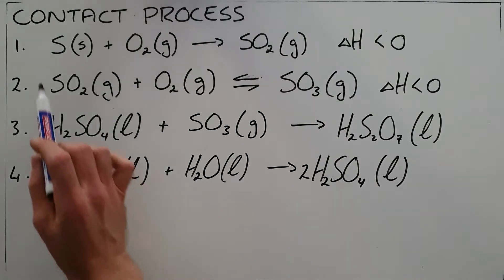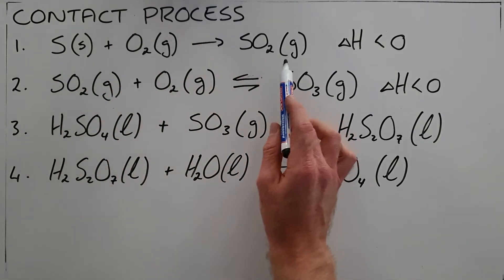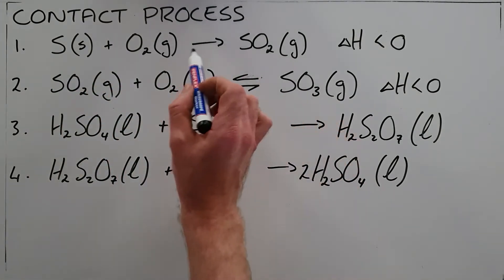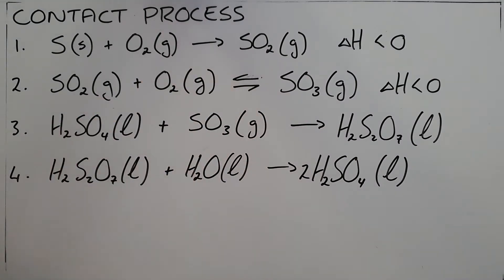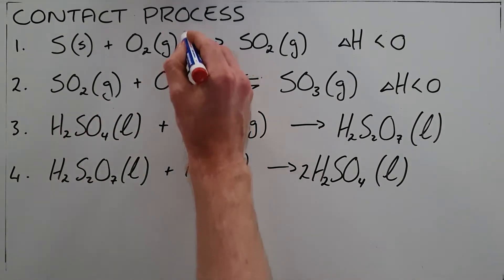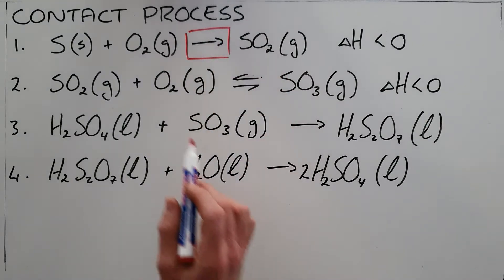So the process starts with burning of sulfur and oxygen to form sulfur dioxide. As you can see here, this is also a one-directional reaction and it is shown as such.